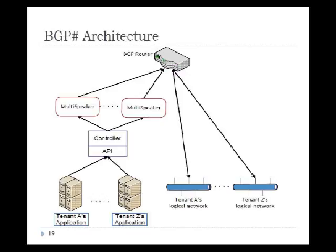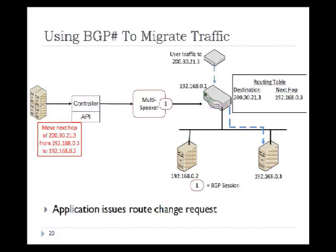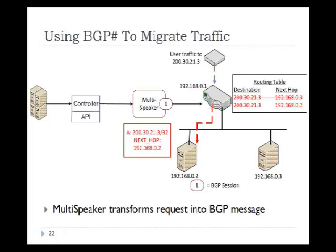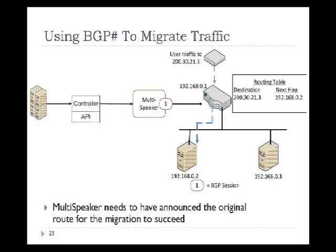Let's look at how this architecture solves the tenant goals. For migrating traffic, the tenant application issues a route change request — such as moving the next hop from one server to another. The controller validates and forwards the request; when it reaches the speaker, the speaker transforms it into BGP messages and sends it to the router, which updates its routing table — moving traffic from 192.168.0.3 to 192.168.0.2. One caveat: the multi-speaker must have already announced the original route for migration to work.